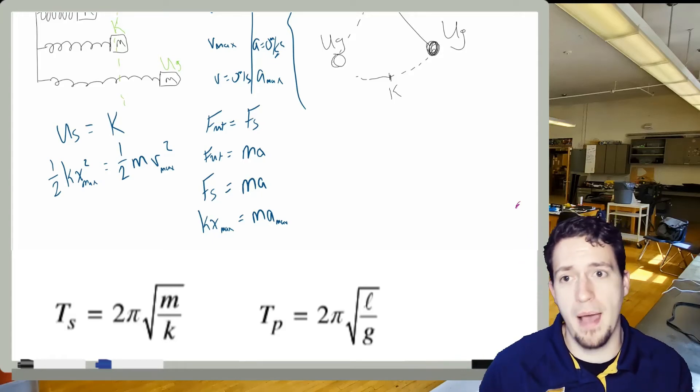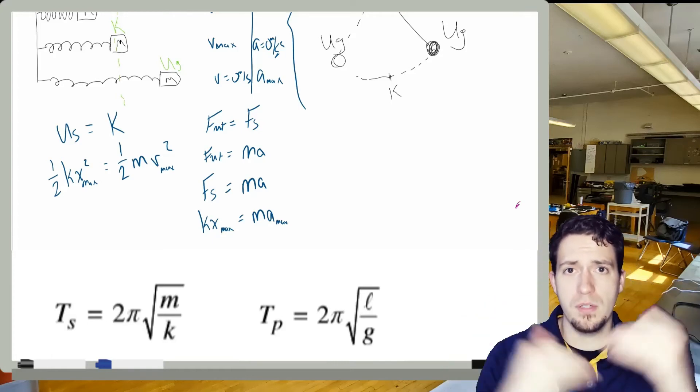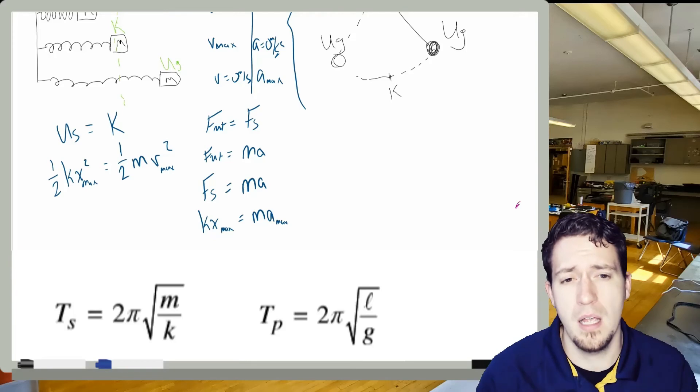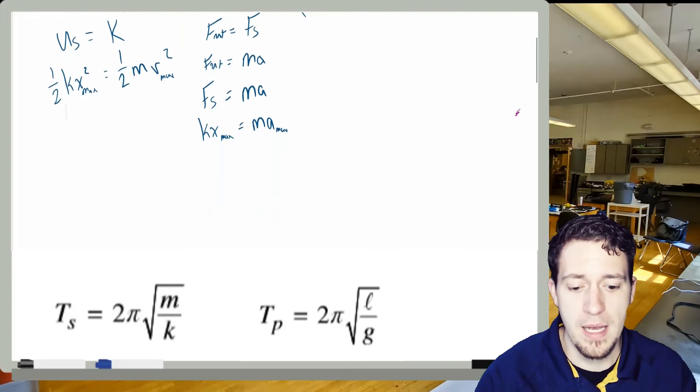So it's really just sort of trading back and forth between spring potential and kinetic energy. Now, you notice the spring oscillator is horizontal. The reason we typically do that is to not have the influence of gravity going on in them.